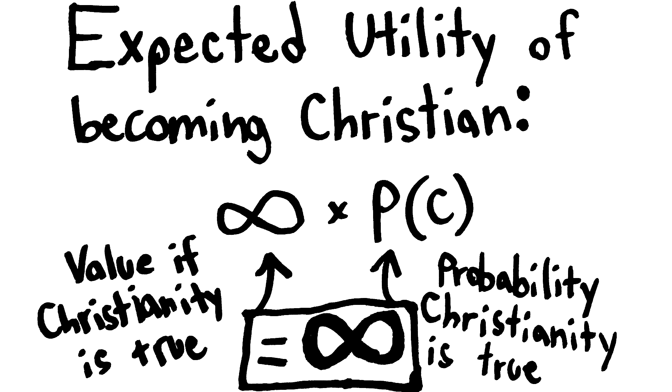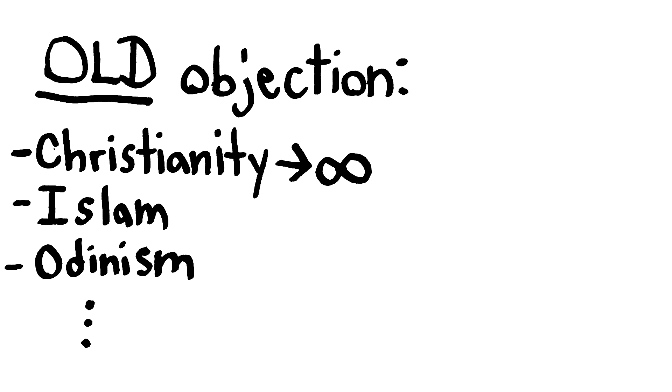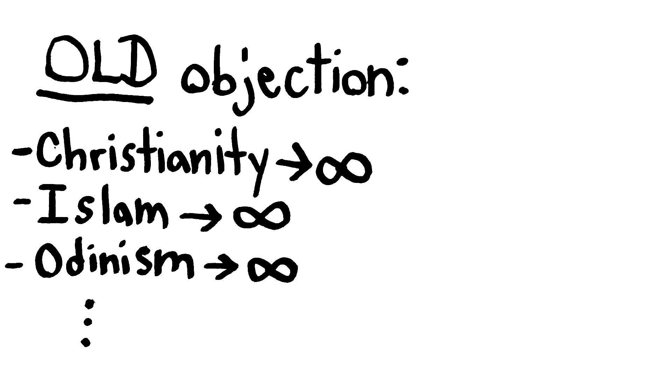Before we get to the new objection I came up with, we're going to look at two other objections, starting with a really old one, the many gods objection. Sure, Christianity has infinite expected utility, but so does Islam, Odinism, Zoroastrianism, and so on, because all those religions promise some sort of infinite reward for adherence. So how do we pick between them?